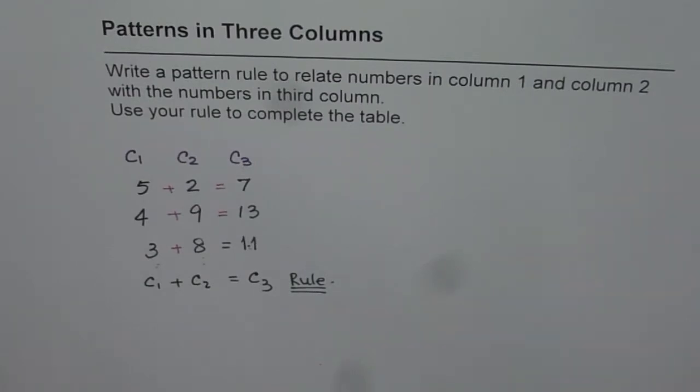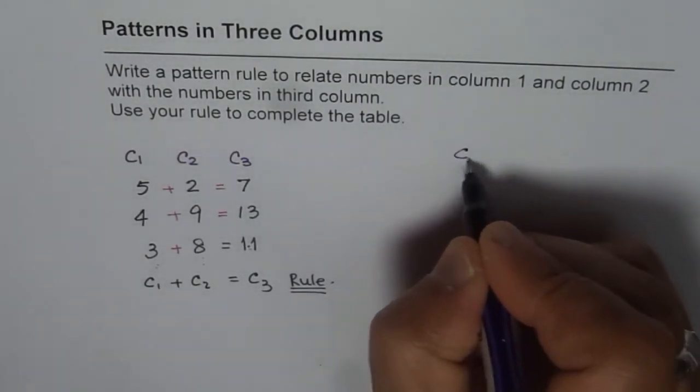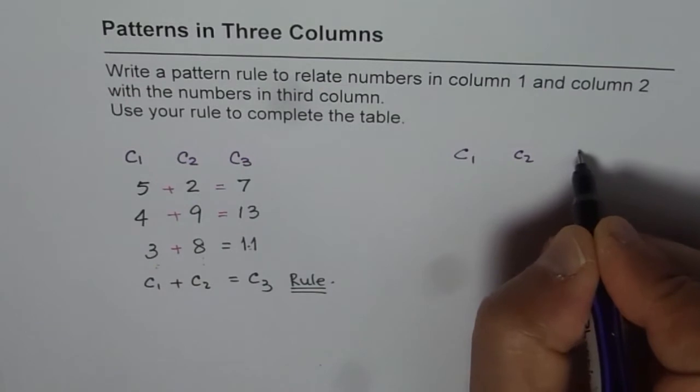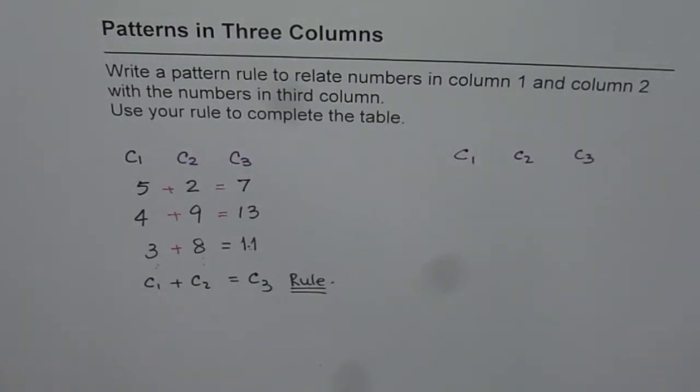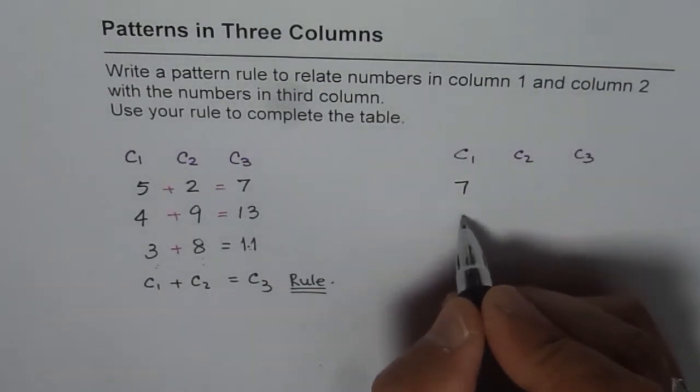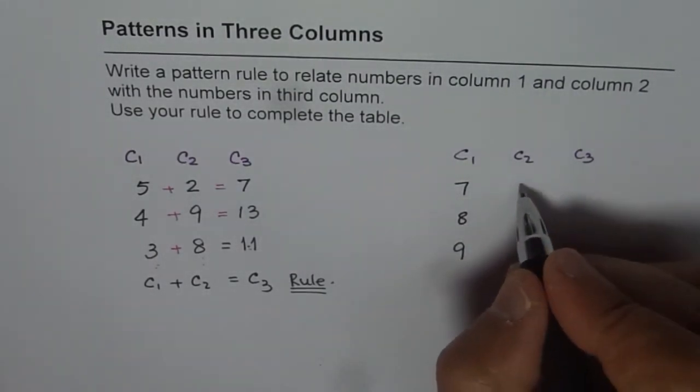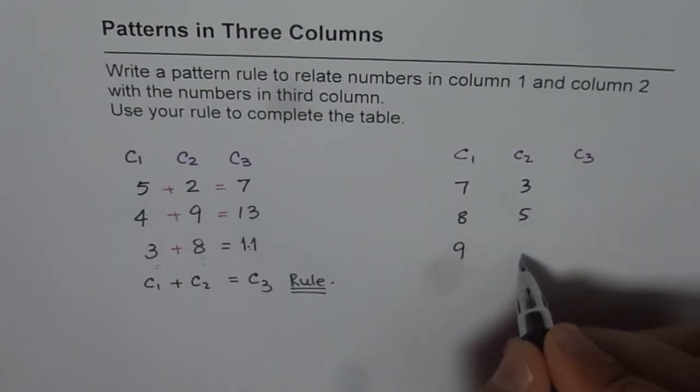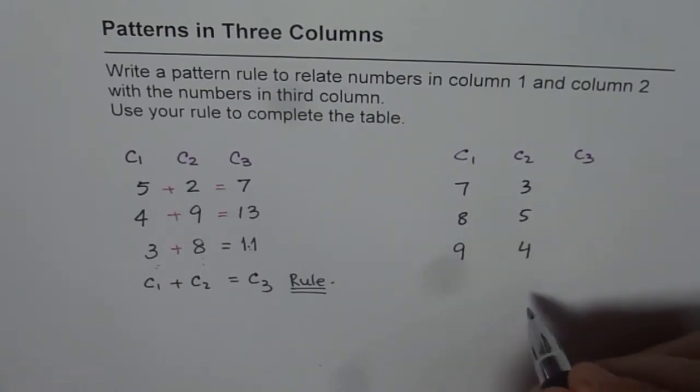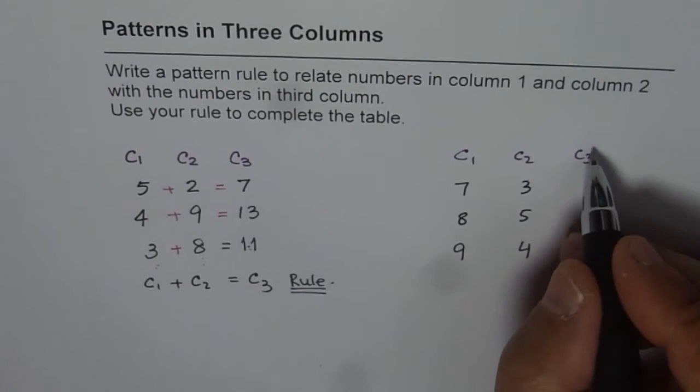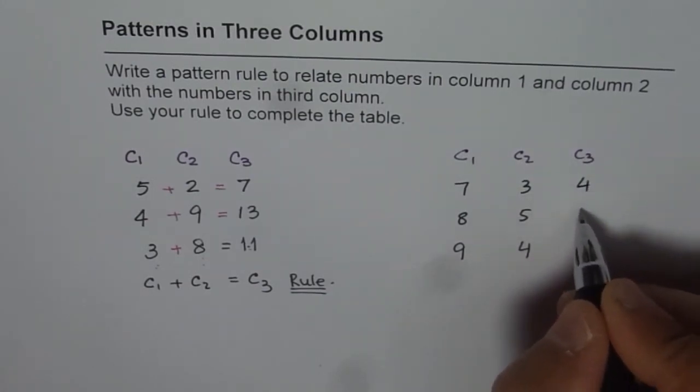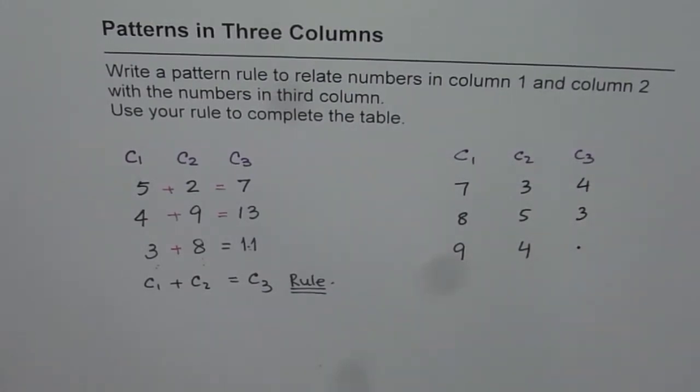Now as an exercise for you, you can try this out. Let's say column one, column two, and column three are given to us. Let me write down a few numbers. This is seven, eight, and nine. And let's say these numbers are three, five, and four. I'm just picking up random numbers. And let me write this as four, three, figure out what is this number, right? So see how combination of column one and two can give you column three.